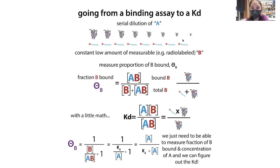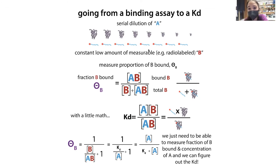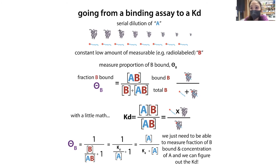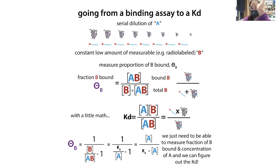Now we set up the experiment. Typically we use a constant low amount of a measurable B — often a labeled molecule. For protein-RNA or protein-DNA binding, we use a low concentration of the DNA or RNA with a radio label or fluorescent label, since these are very sensitive. We increase the concentration of A across a range — typically about 100-fold above and below the expected Kd — using serial dilution. You'll usually need to do some scouting first to find the optimal concentration range before the final experiments.